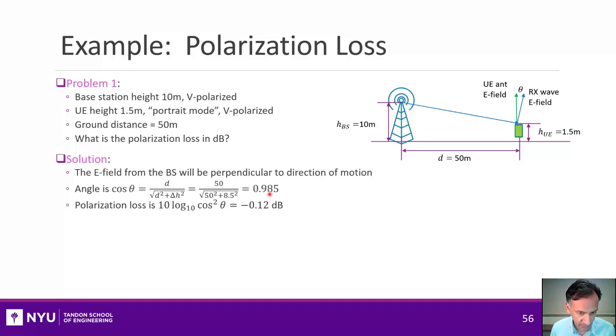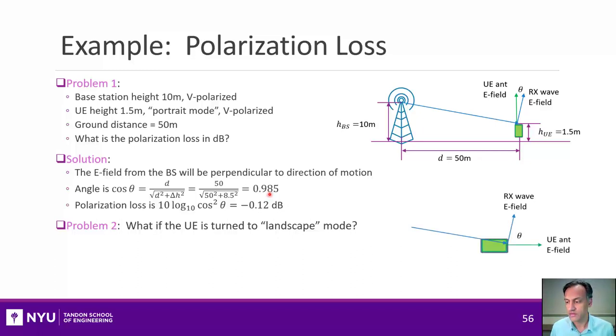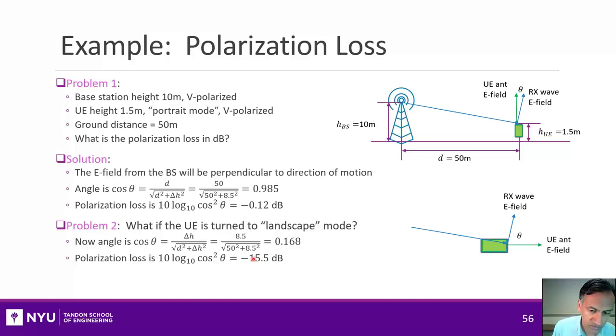But just to show you that polarization can be important, let's say I turn the UE in landscape mode. So maybe you're watching a video or something. Now, let's look at where this UE antenna is pointed, so it's pointed here, and these are almost orthogonal to one another. Particularly, if you calculate the cosine of the angle, it's about 0.168, and when you compute that polarization loss, now it's down to about minus 15.5 dB. So, we lost a lot of power. One of the conclusions of this, you might think, well, how does my cell phone work at all? If I can just turn it, and I still lose 15 dB.